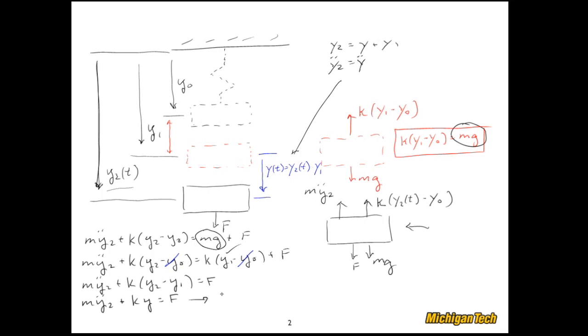I can replace the y2 with y, plus ky is equal to f. And that's the result we had on the previous page.